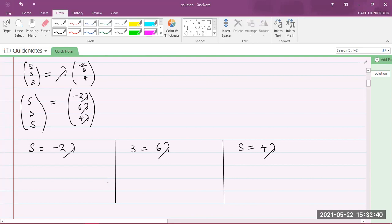Let's calculate the value of lambda first. We need that first. So we have 3 is equal to 6 lambda. So I could say that lambda is equal to 3 divided by 6, which is also the same as a half.